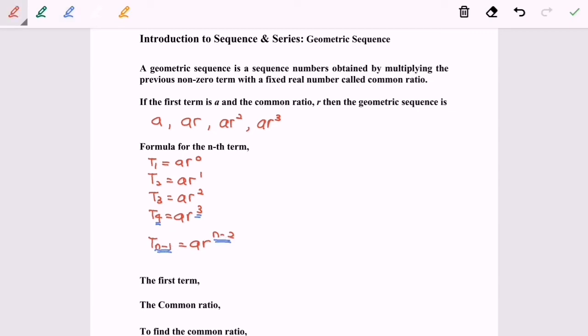So finally, if it's Tn, we will have AR to the power of n minus 1. Because every time we move, we will have to minus 1.